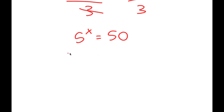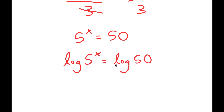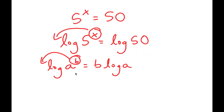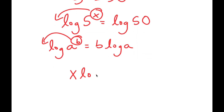From here, I'm going to take the log on both sides. So I get log of 5 to the power of x is equal to log of 50. If I have something in the form log a to the power of b, I can move the exponent to the front, so this turns into b times log a. In this case, I have log 5 to the power of x, and I can move x to the front. So I get x times log 5 is equal to log 50.